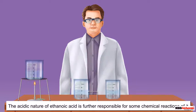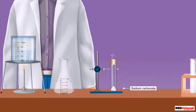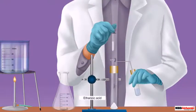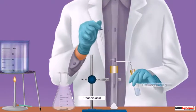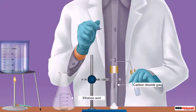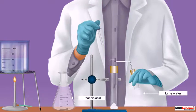The acidic nature of ethanoic acid is further responsible for some of its chemical reactions. Let's check out one such reaction. Shown here is sodium carbonate in a test tube. To this, let us add a dilute solution of ethanoic acid. A gas is released which is then allowed to pass through freshly prepared lime water. As we can observe, the lime water turns milky.